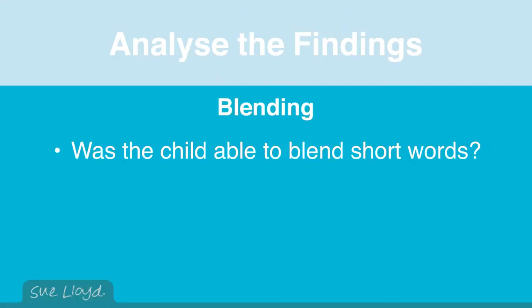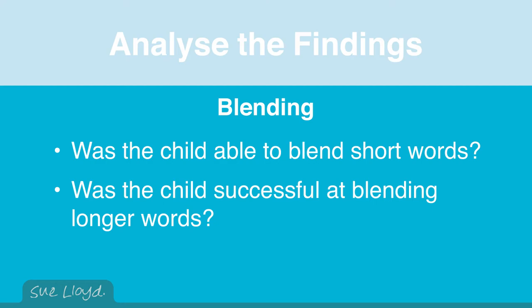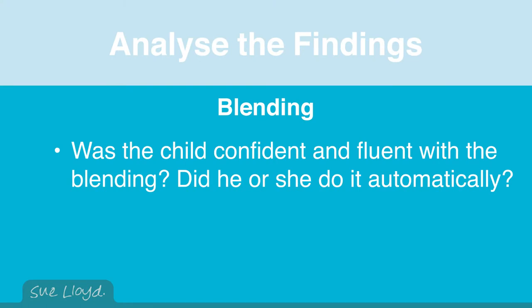Then analyse your findings. Was the child able to blend short words? Was the child successful at blending longer words? Of course, when assessing the child's skill of blending it is best to use words that have letter sounds that you know are known by the child. You cannot expect accurate blending if the letter sounds are not known. Then, was the child confident and fluent with the blending? Did he or she do it automatically?